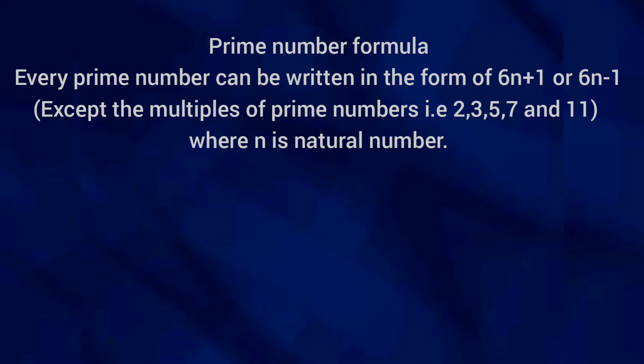A prime number formula states that every prime number can be written in the form of 6n + 1 or 6n − 1, except multiples of prime numbers, that is 2, 3, 5, 7, and 11, where n is a natural number.